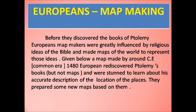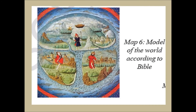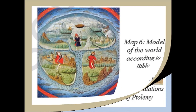Before they discovered the books of Ptolemy, European map makers were greatly influenced by religious ideas of the Bible and made maps to represent those ideas. A map made around CE 1480 is shown here. Europeans then discovered Ptolemy's books, though not his maps, and were stunned to learn about his accurate description of the location of places. They prepared new maps based on them.